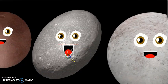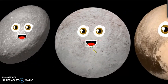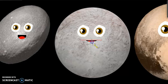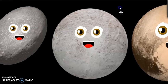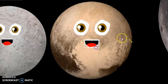Haumea is a dwarf. Eris is here. Pluto is my name.